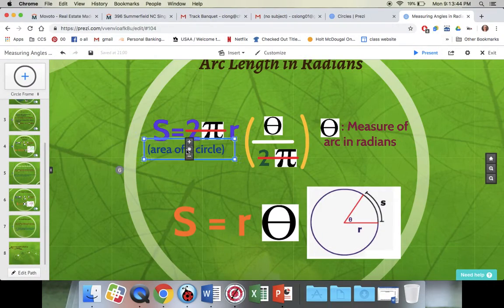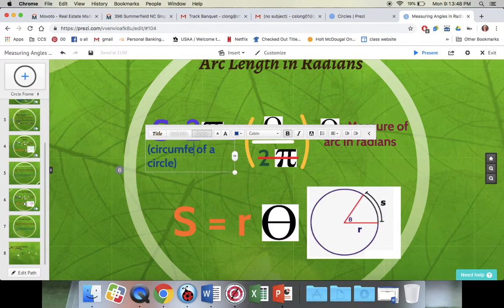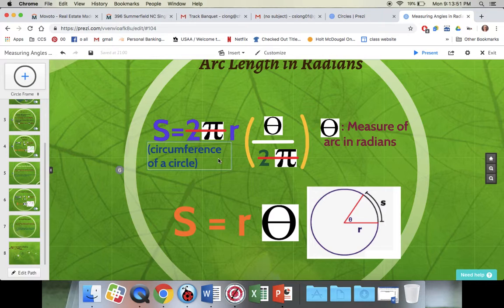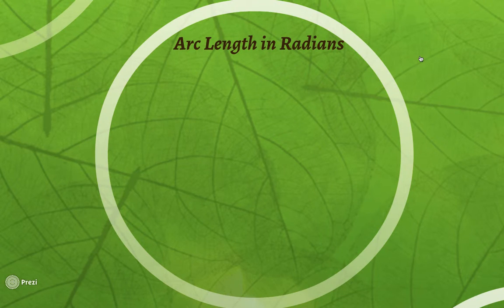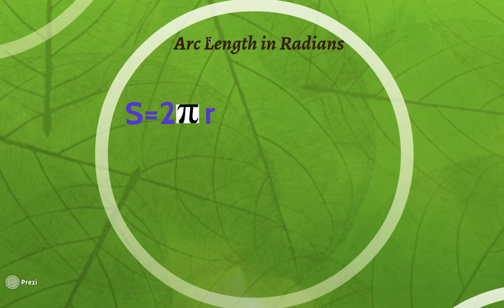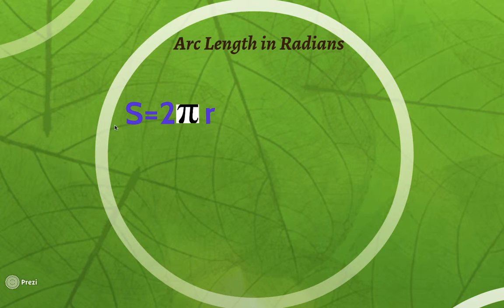I realized I made a mistake on something, so I'm going to fix that quickly — okay, it's changed now. So let's move on to arc length in radians. When dealing with arc length, remember it's a fraction of the circumference of the circle. When the angle is in radians, mathematicians use the variable S instead of L for arc length — I'm not entirely sure why, maybe it stands for 'side' or something, but that's the convention.